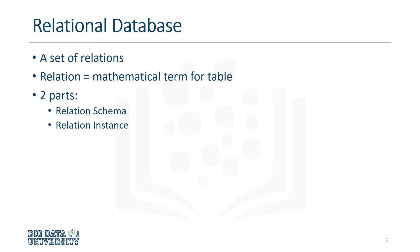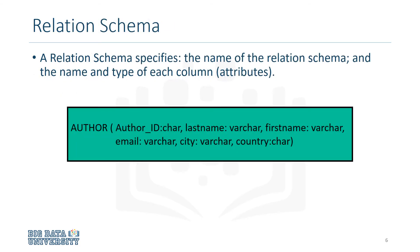A relation is made up of two parts: relational schema and relational instance. The relational schema specifies the name of the relation, and the name and type of each of the columns, which are the attributes. The example here is the entity author.